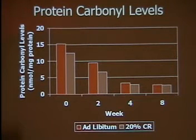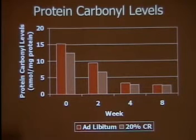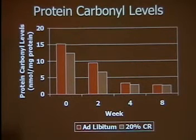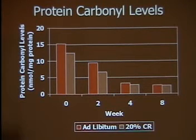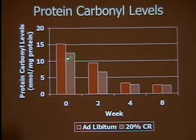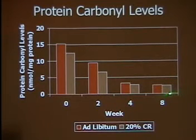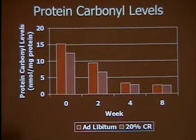Protein carbonyl is another marker of oxidative stress, and is a product of protein oxidation. The magnitude of these changes in oxidative stress were marked and great. This is a four-fold decrease in the level of protein carbonyl with the alternate-day calorie restriction eating plan.